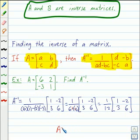we get the inverse of A, which is 1 twelfth, negative 1 sixth, 1 fourth, 1 half. So we have found A inverse.